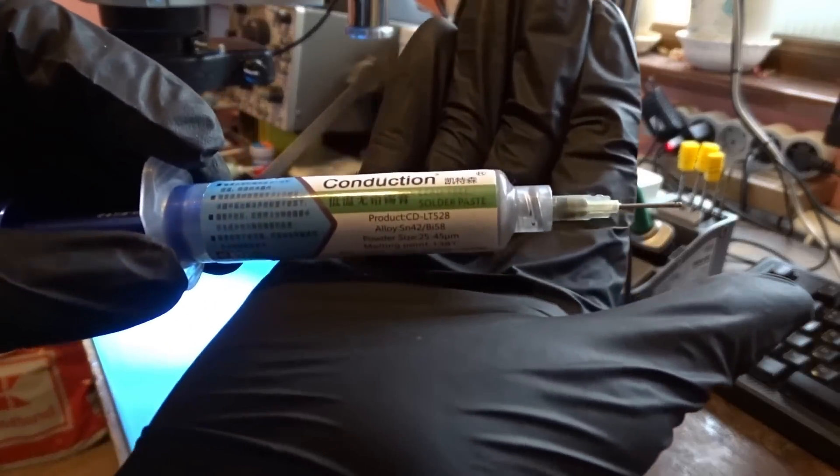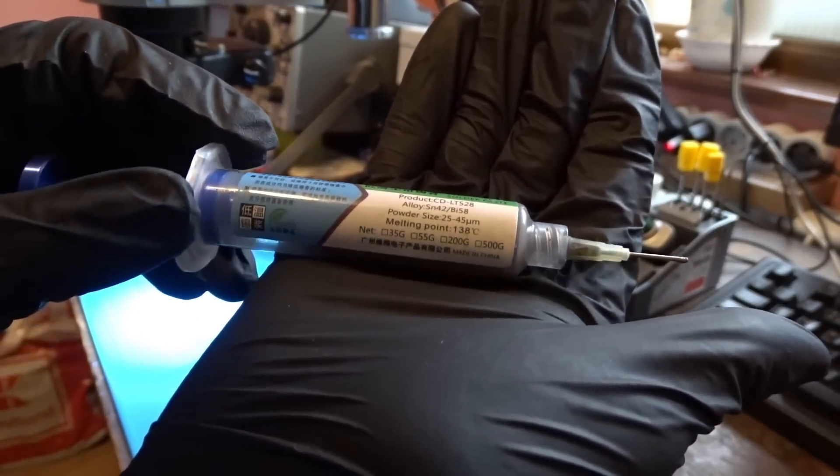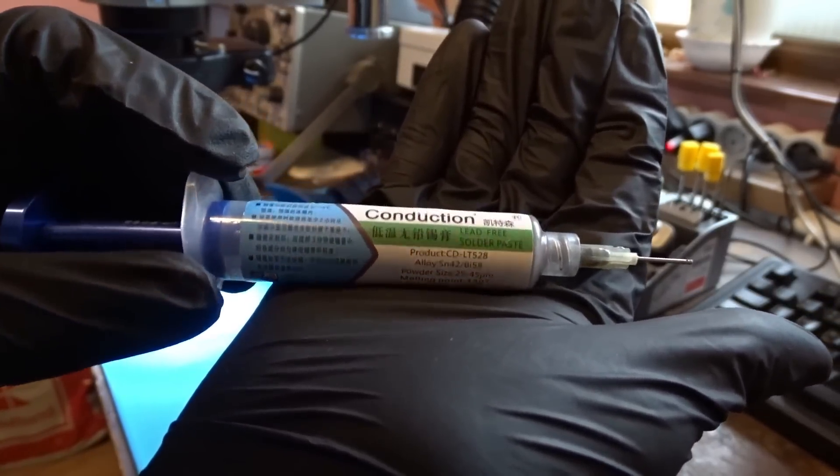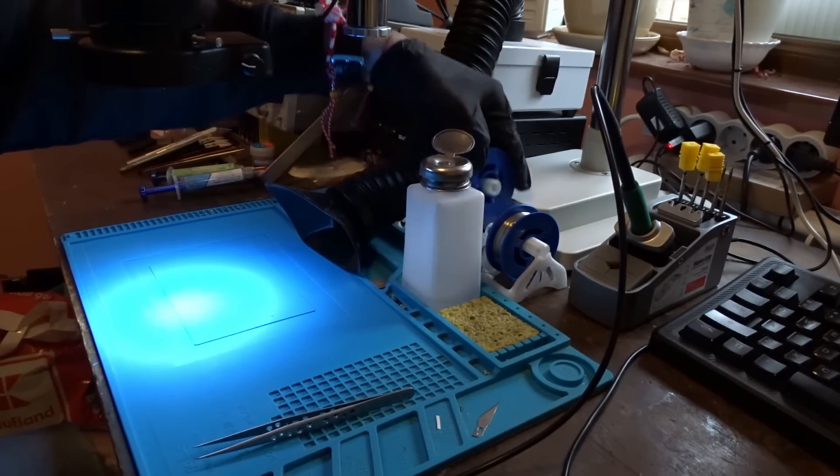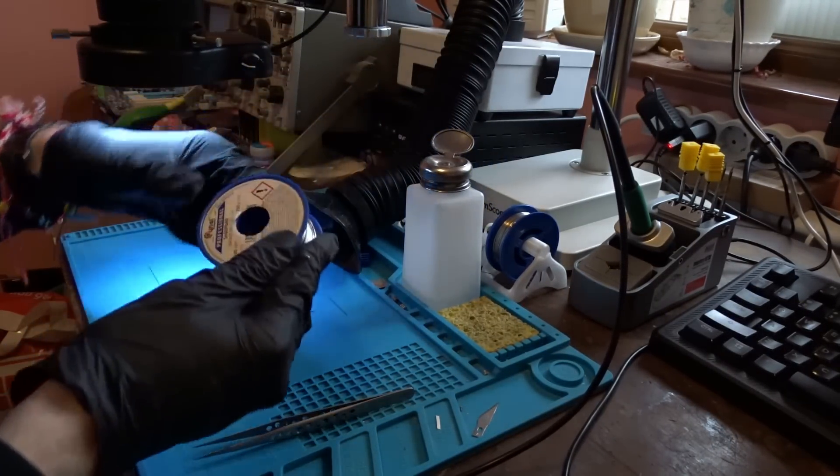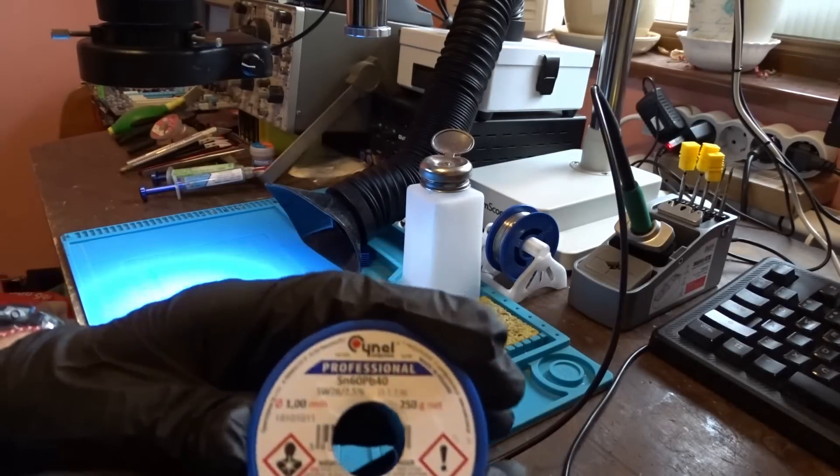After this, we will need a low melt solder alloy. I'm going to be using this bismuth-based tin alloy. Next up is the regular leaded solder. It doesn't necessarily have to be with the rosin core since we're going to add flux either way.